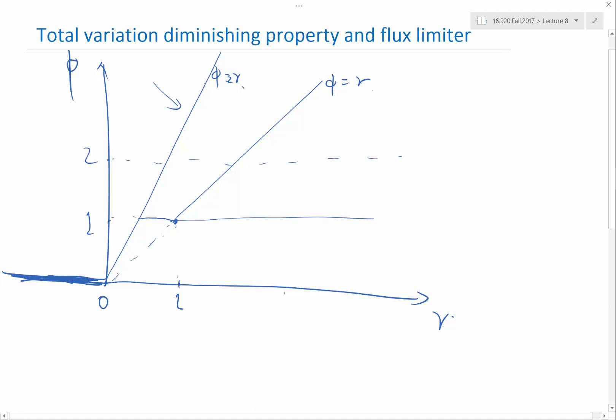The kind of limiters that works best are, has to go through this region. If you go out of this region, either you compromise the second order accuracy, or you compromise the total variation diminishing property.